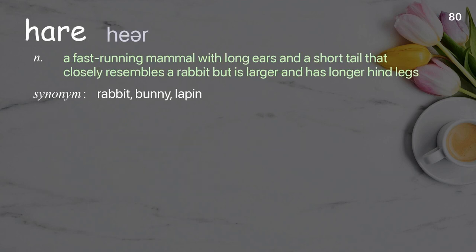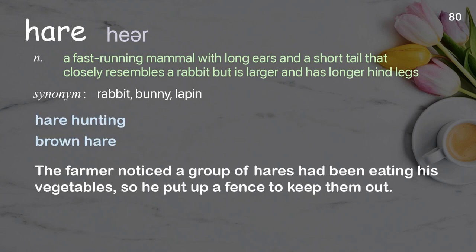Hare. A fast-running mammal with long ears and a short tail that closely resembles a rabbit but is larger and has longer hind legs. The farmer noticed a group of hares had been eating his vegetables, so he put up a fence to keep them out.